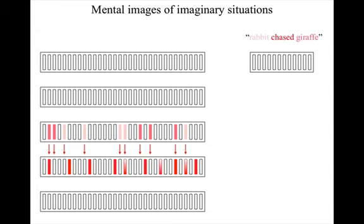So there's going to be receptive field expansions to increase the number of detections, and the subjective experience will now be as if looking at a rabbit chasing a giraffe — although again, without the receptive field detections close to visual inputs. And as I mentioned in an earlier section, the receptive field expansions provide a basis for recalling the imaginary scene in the future. So now we'll go on to look at somewhat more complex sentences and how the more complex sentences can be understood in the next section.